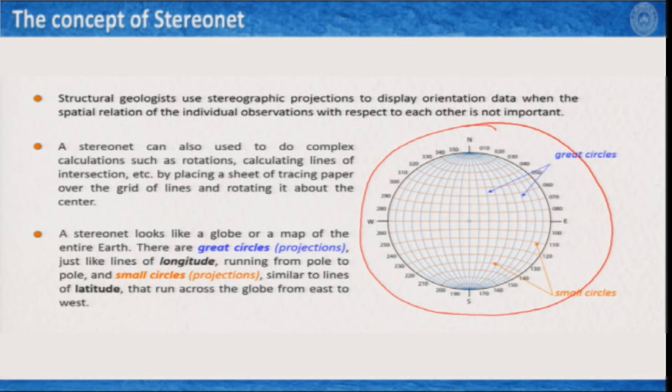There are some vertical grids and some horizontal grids. The vertical grids are known as great circles, very analogous to longitude, running from one pole to another pole. There are also small circles that run from east to west. In this image, the great circles are marked by blue color and small circles are marked by orange color.